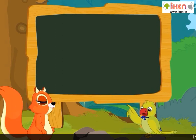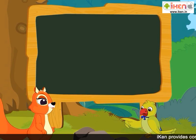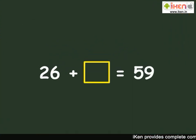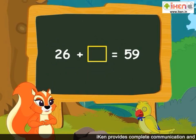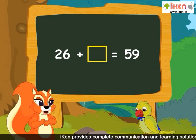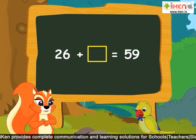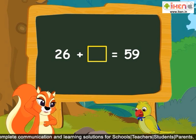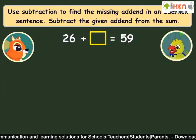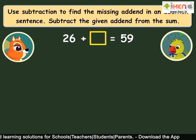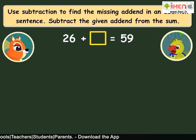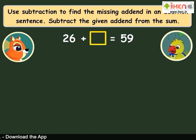Well done, Amber — that was quick! Now tell me if you can find the missing number in this addition sentence. One of the addends is missing, but the sum is given. I don't know how to find the missing number. Don't worry, I will help you. We can use subtraction to find the missing number in an addition sentence — all we have to do is subtract the given addend from the sum.